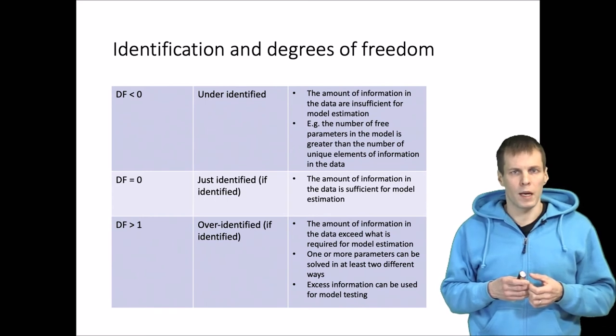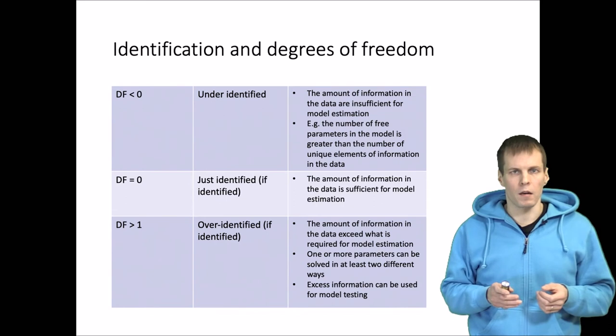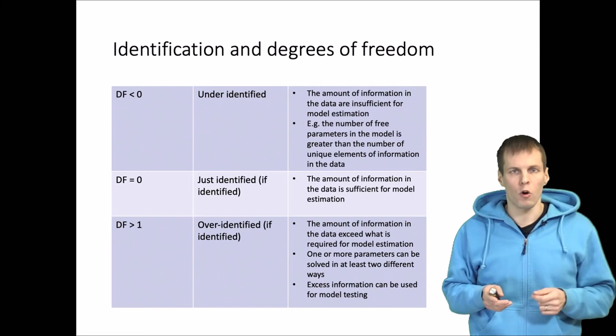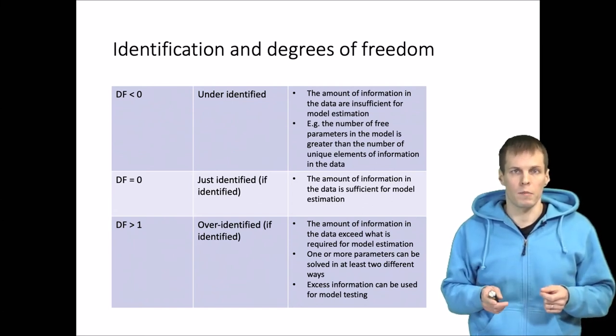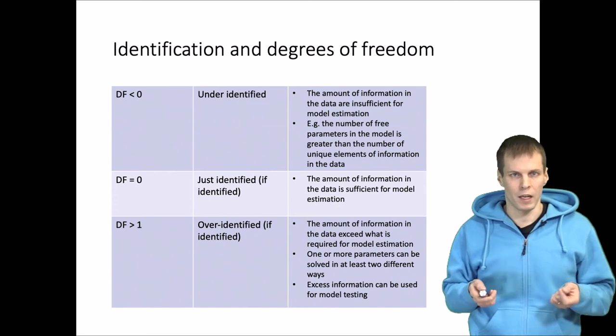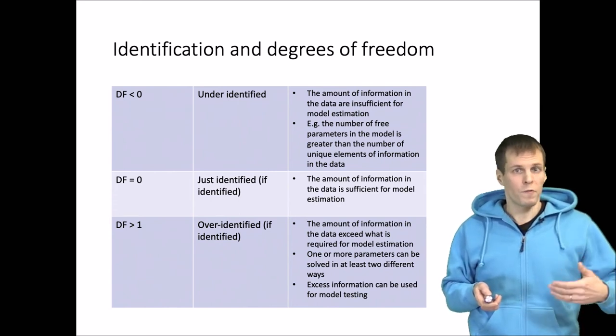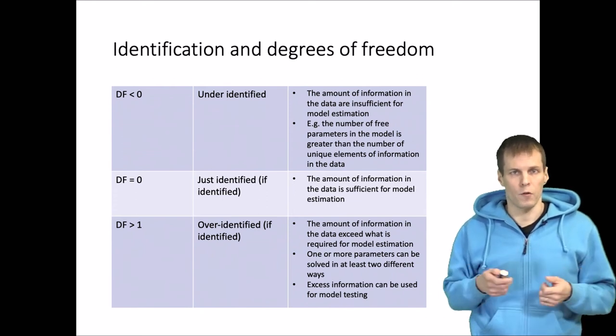For example, if we have x and y, we can estimate one relationship between x and y because we have one covariance. But if we try to estimate a bidirectional relationship, that cannot be done. Just identified means our model should fit the data perfectly because there is no excess information.